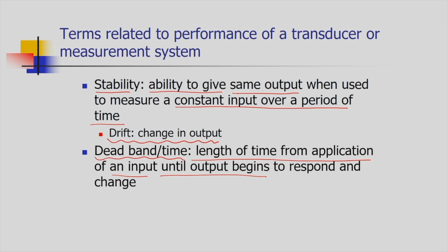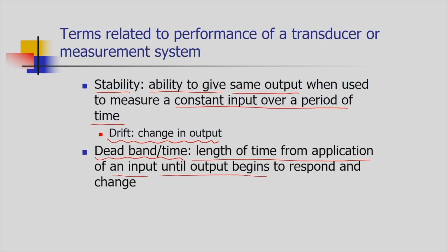For example, in mechanical systems such as bearings, we provide angular velocity to the shaft. To measure that angular velocity, the system must reach a threshold value, and it takes some time to achieve that threshold. The time taken to reach that threshold is called the dead band or dead time.